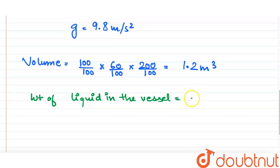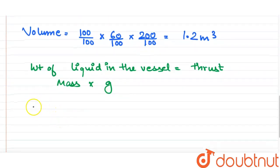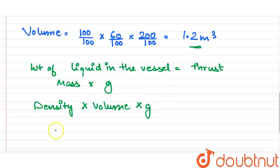This will be equal to thrust. And weight will be equal to mass × gravitational acceleration g, and mass can be written as density × volume. Mass is density × volume, and density is already given to us, we have already found the volume.